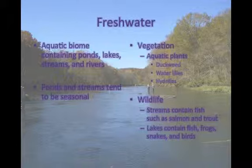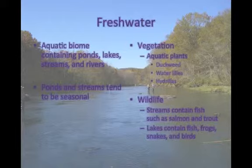The last biome we are going to discuss is the freshwater biome. The freshwater biome includes ponds, lakes, streams, and rivers. Ponds and streams tend to be seasonal due to drying out in the summer season. The different aquatic plants that grow in the freshwater biome include duckweed, water lilies, and hydrillas. Streams contain fish such as salmon and trout, while lakes contain fish, frogs, snakes, and birds.